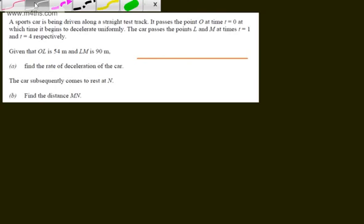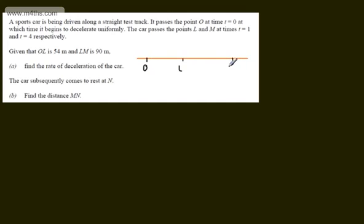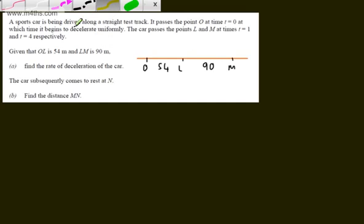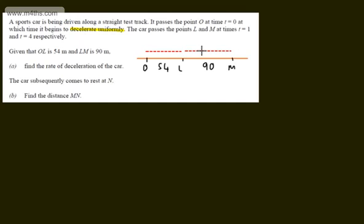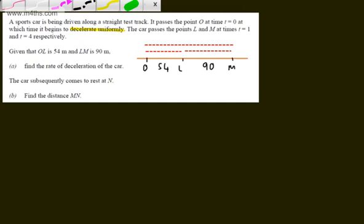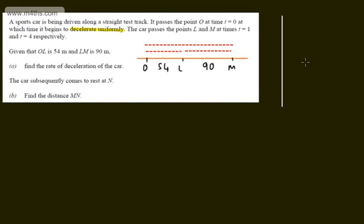This is simply a particle moving in a straight line. If I draw that straight line we can put three points on: O here, L here and M just here — so OL then M. We've got 54 and we've got 90. I could consider three different sections: O to L, L to M, or O to M, as the deceleration remains the same throughout. I'm going to put this information in a table and use SUVAT.